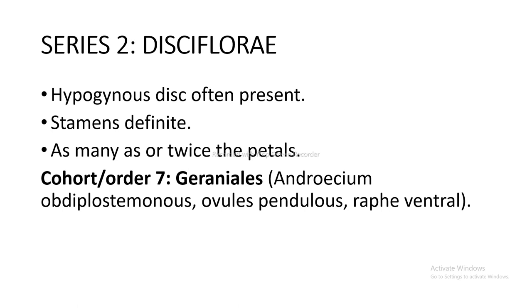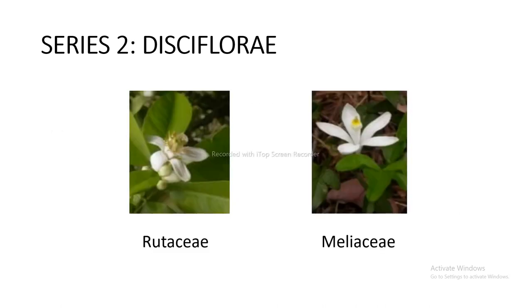Series 2 Disiflorae: flowers hypogynous, disc present, stamens as many as or twice the petals. Cohort and order 7 Geraniales — androecium obdiplostemonous — includes Rutaceae and Meliaceae as shown in the figure. Cohort and order 8 Olacales — androecium diplostemonous, ovules pendulous and raphe dorsal — includes Olacaceae as shown in the figure.